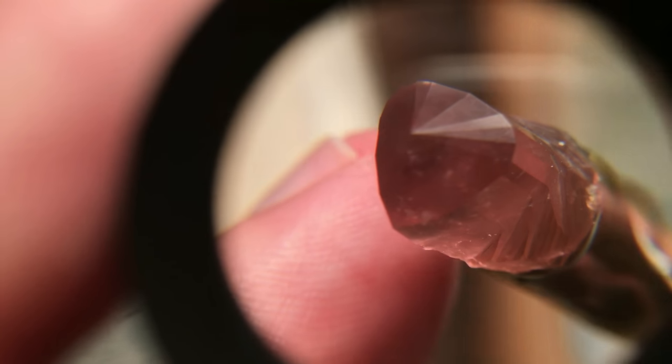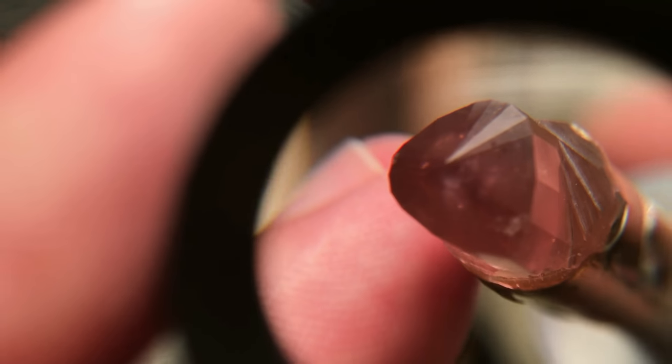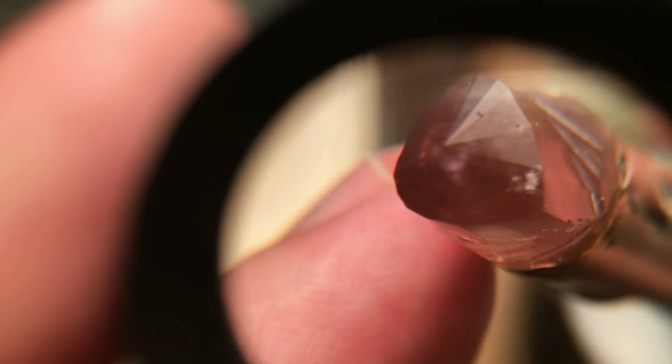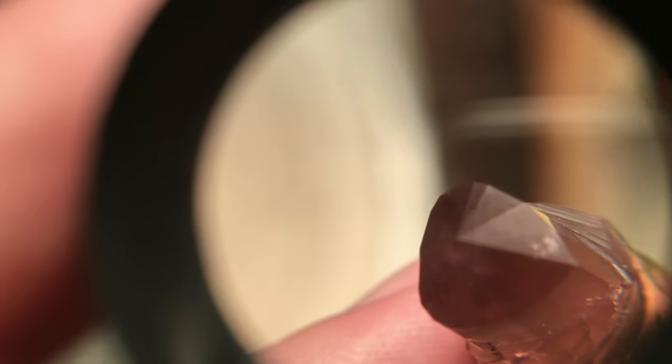I went over all the facets again with the 3000 grit lap, both the pavilion and all the girdle facets. Level the girdle and we're ready for a polish.